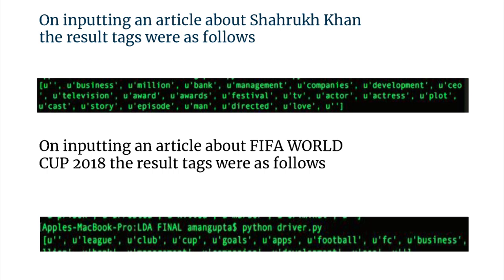After training the model, when we pass a document to it, the bag of words related to that document are printed — specifically the bags of words for topics whose weight is greater than a threshold value, which depends on the user. When we pass a document about Shah Rukh Khan, it prints words like actor, actress, director, episode, story. For a FIFA World Cup 2018 article it prints words like football, goals, club, league, etc.